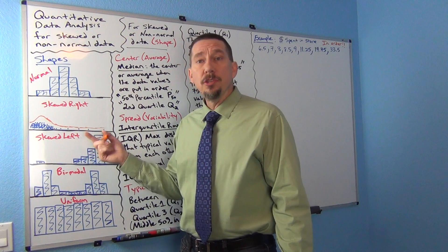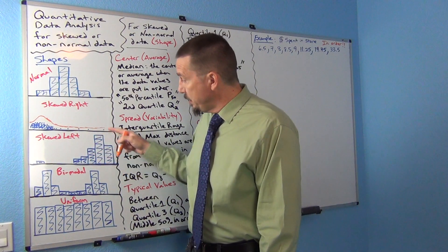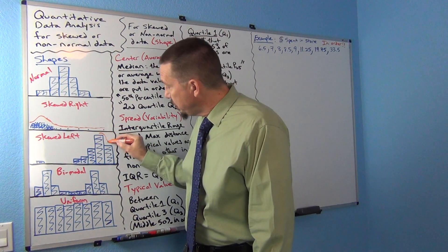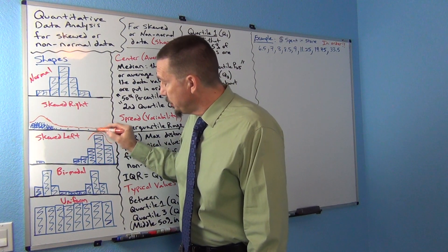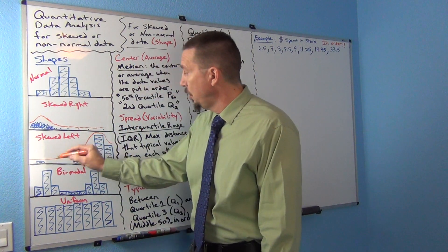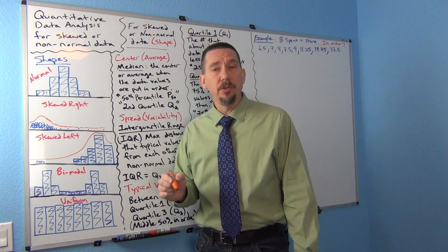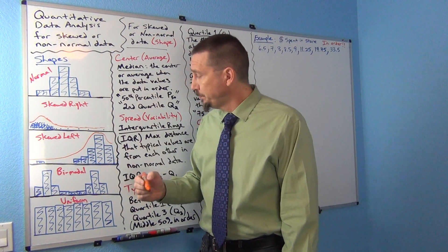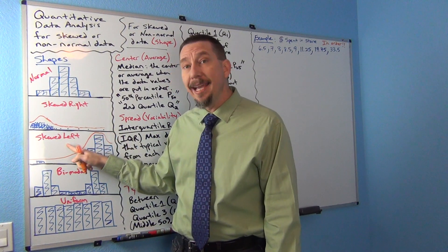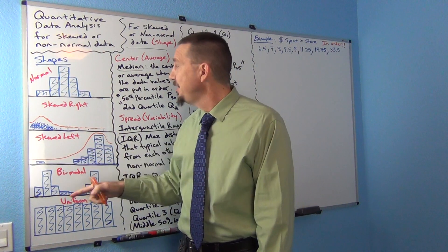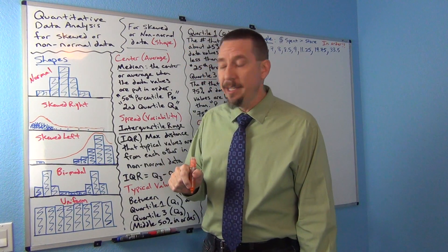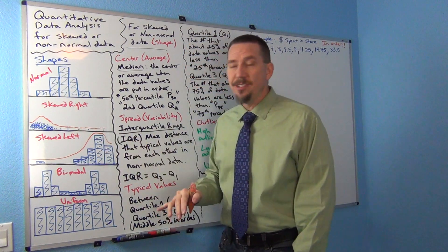You can also have skewed left. This is where the center is on the far right of the graph and you have a short tail to the right and a very long tail to the left. Sometimes stat books refer to this as negatively skewed because negative numbers go to the left, and positively skewed for skewed right. I tend to just say skewed right or skewed left.